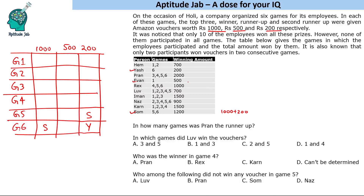Ivan played the first game and won 500 rupees, so Ivan is the runner-up in G1. Him played two games and won 700, which is 500 plus 200. He cannot win 500 in the first game because Ivan has already won it, so him wins 500 in one game and 200 in another.